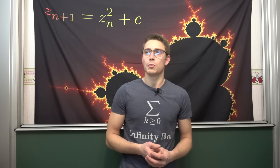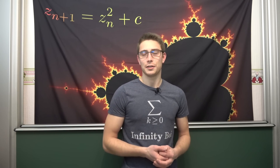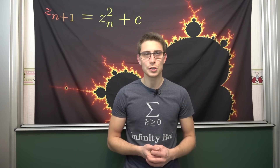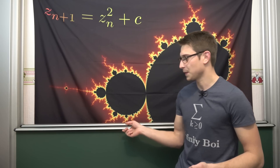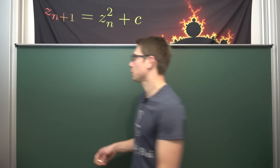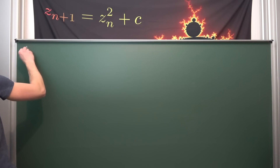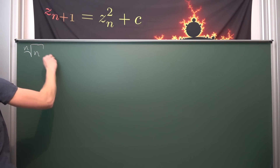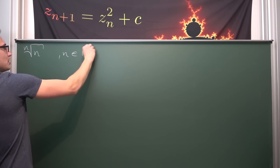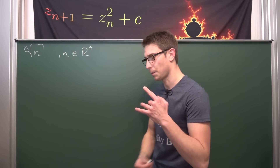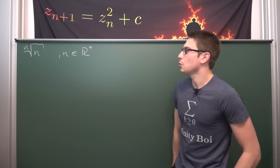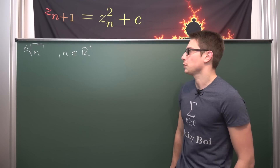Recently I was taking a look at square roots and cube roots and the like, and I was curious about the nth root of n, where n is an element of the positive real numbers, including 0. What I was wondering is: what is the behavior of the nth root of n?